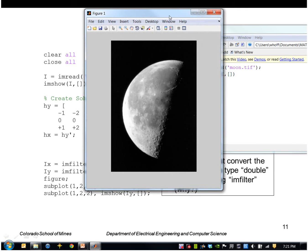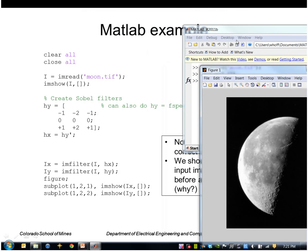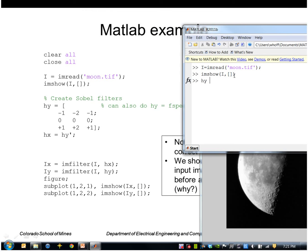Okay, so here's my image. I'm going to create the Sobel y operator which looks like this and the Sobel x of course is just the transpose of the Sobel y operator.